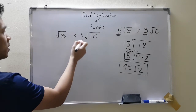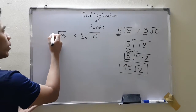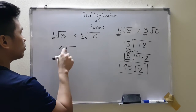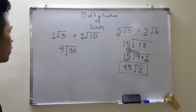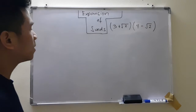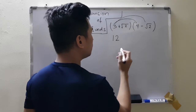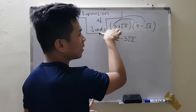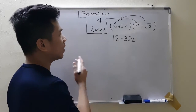Another example: when multiplying, if there's no number outside the surd, it doesn't mean it's 0 — there's always a 1 there. So 1 times 4 gives 4, and inside the square root, 3 times 10 is 30. Since 30 can't be simplified, leave it as 4 root 30. We're also going to expand surds, which is the same as expanding binomials. For example, 3 times 4 gives 12, and 3 times negative root 2 gives negative 3 root 2. Since one is a normal number and the other is a surd, just place them side by side — do not multiply 3 by 2 inside the root.